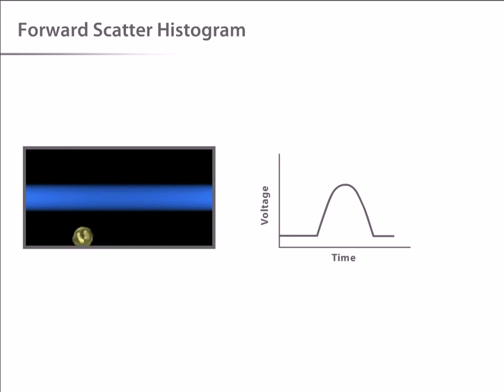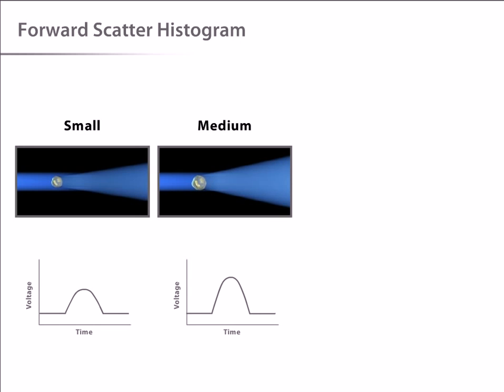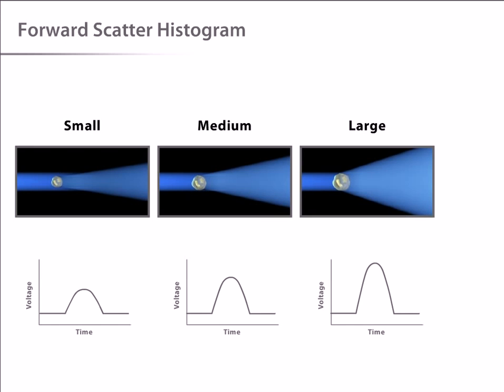The scattered light received by the detector is translated into a voltage pulse. Because small cells produce a small amount of forward scatter and large cells produce a large amount of forward scatter, the magnitude of the voltage pulse recorded for each cell is proportional to the cell size.